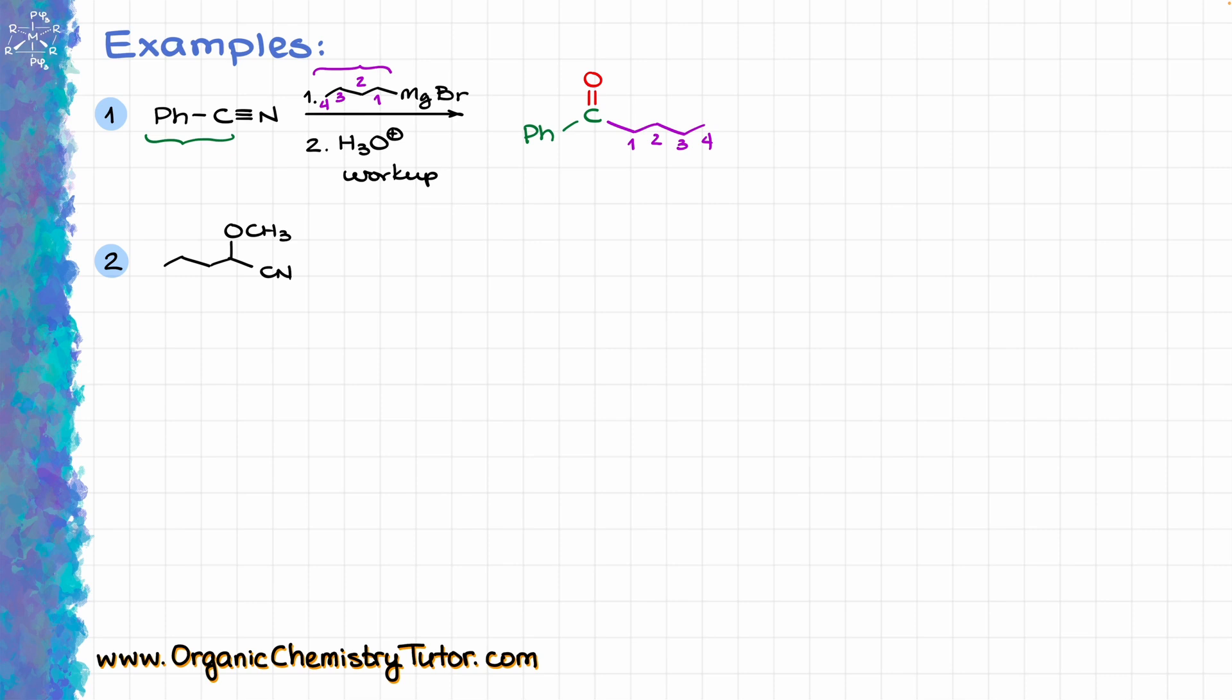Or let's say we have the following nitrile, and we are reacting that with methyl magnesium bromide, followed by the acidic workup of course. Now again, in this case, I'm going to redraw my molecule all the way up to the carbon of the nitrile, which is going to look the following. So I have one, two, three, four carbons, I have my OCH3 over here, and then I have this carbon of the nitrile, then I'm going to make that into a carbonyl, and for my Grignard reagent I only have one carbon, just the methyl group. So I'm just going to add this methyl group over here, and that's my product.